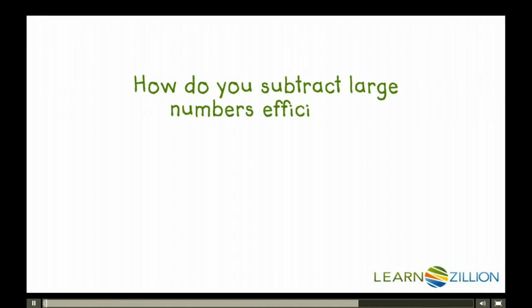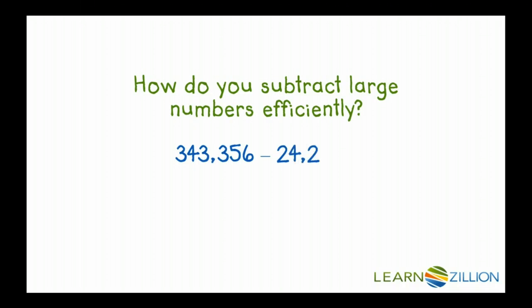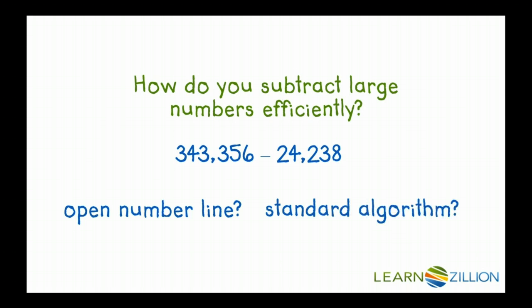How do you subtract large numbers efficiently? 343,356 minus 24,238. Do I use an open number line? Do I use a standard algorithm?